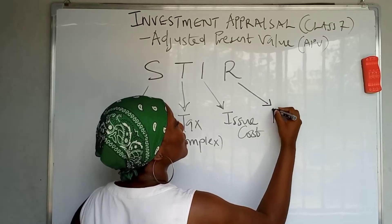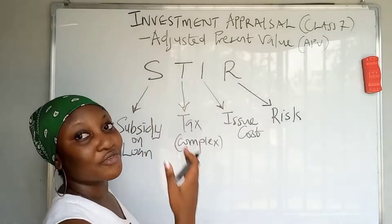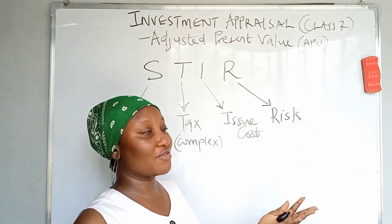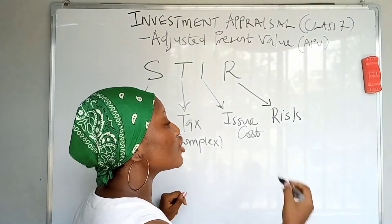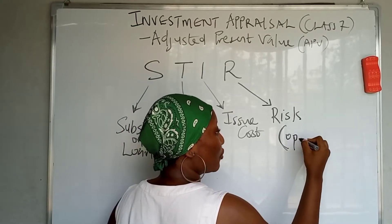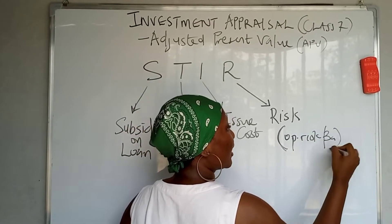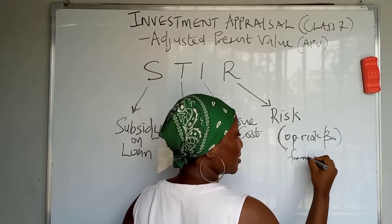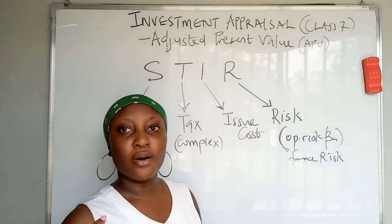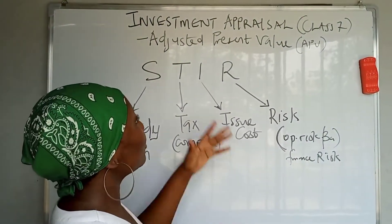E stands for Issue costs — whenever they tell you there are issue costs. R stands for Risk, which is even the main reason for APV. When a company is going to do a new business, there will be a new operational risk — a new business risk — and most likely a new finance risk if they are going to borrow money and change their capital structure.